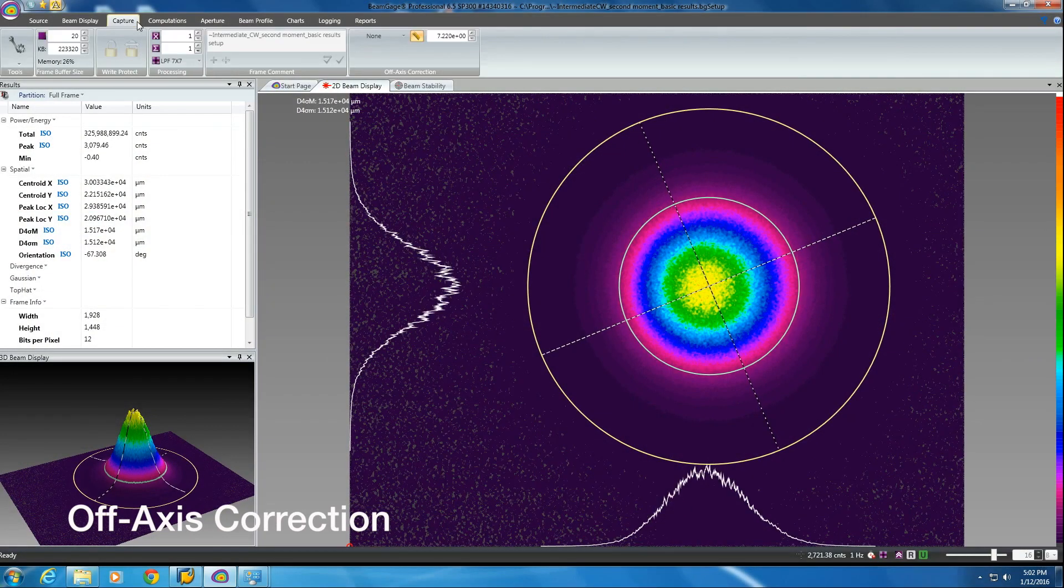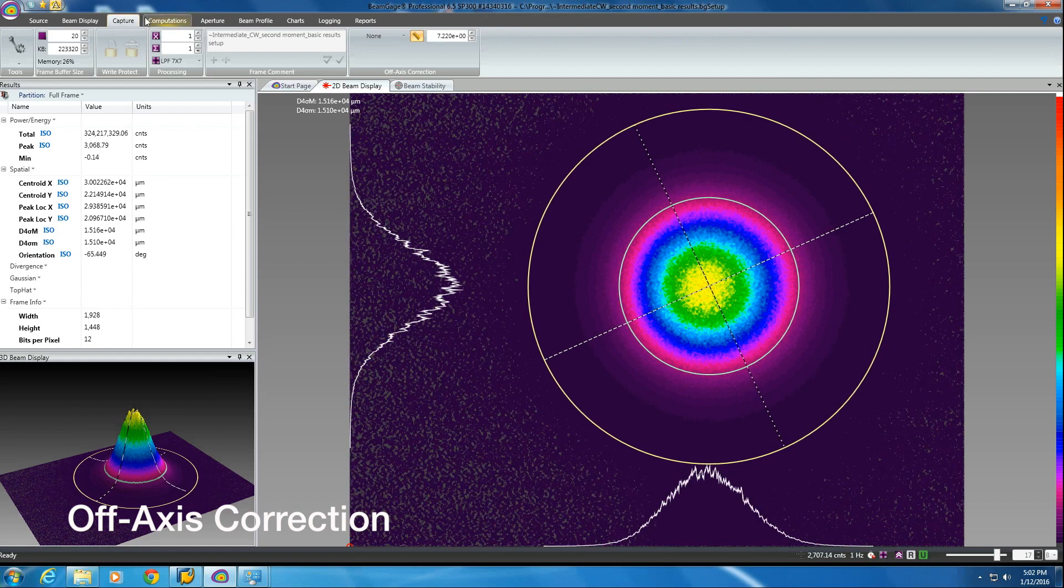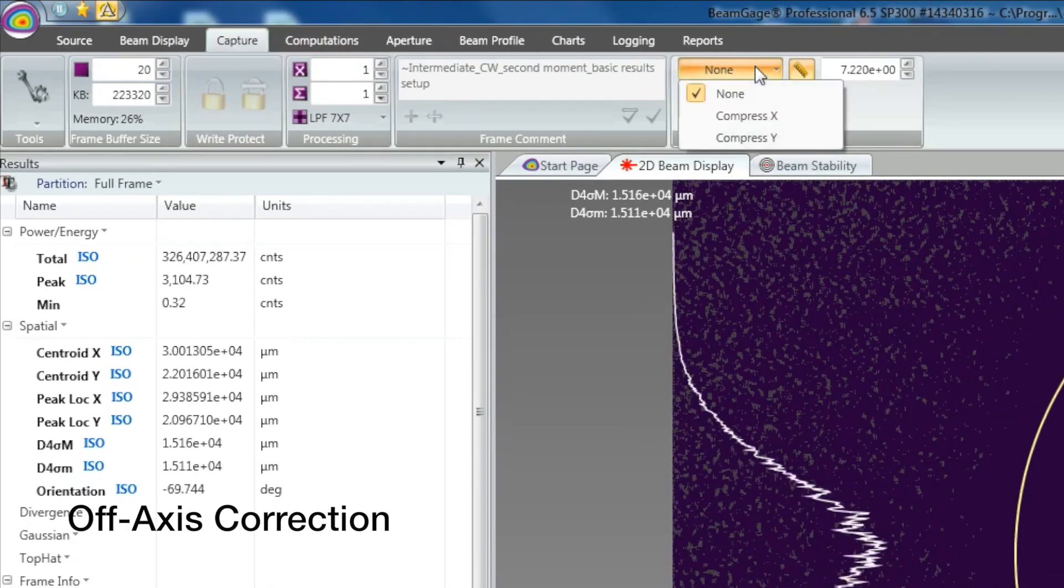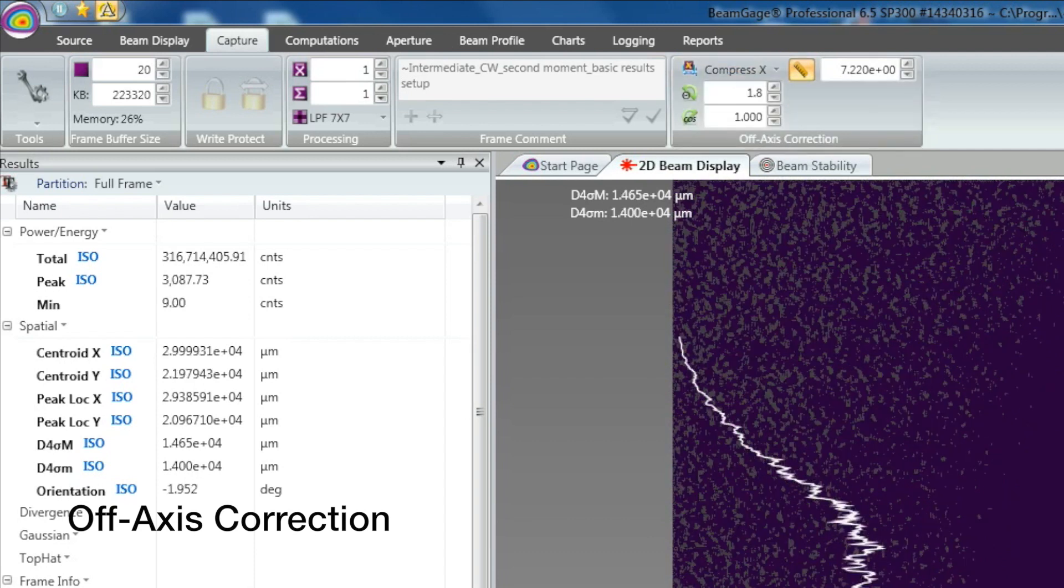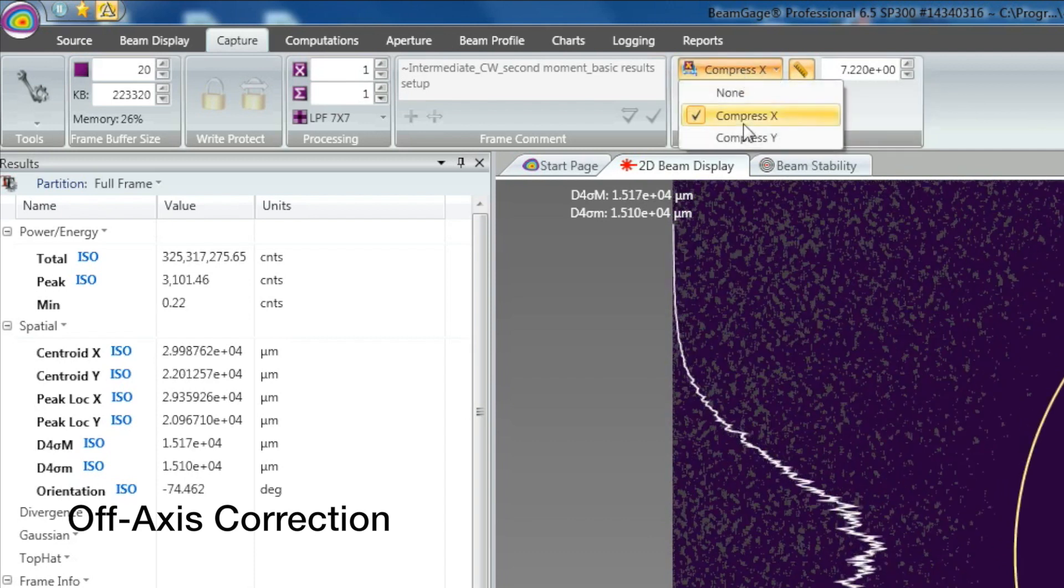Off-axis correction is available in Beam Gauge Professional. It allows the user to correct for beam aspect ratio distortion when the beam under test is compressed in one axial direction.